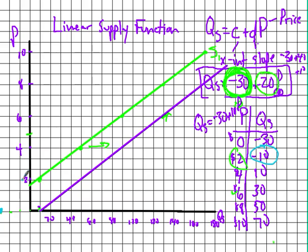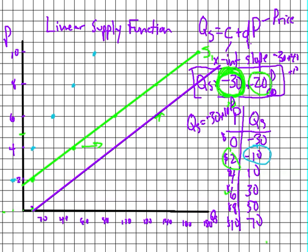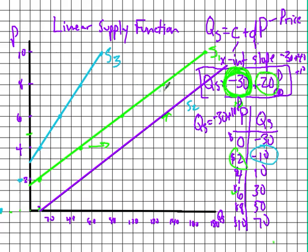At $4: minus 30 plus 40 gives 10. At $6 it's 30. At $8 it's 50. At $10 it's 70. Plotting these points and connecting them gives us supply curve S3. As the slope number gets smaller, the curve becomes steeper — more inelastic. If we increased the slope to say 50, the curve would flatten out and become more elastic.